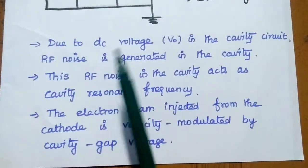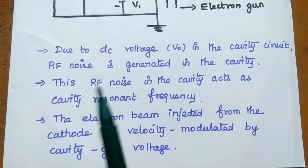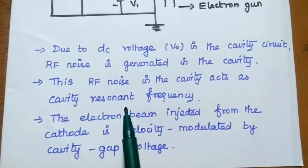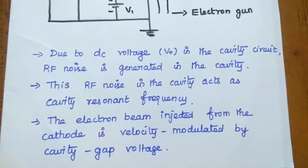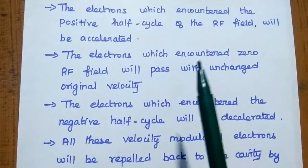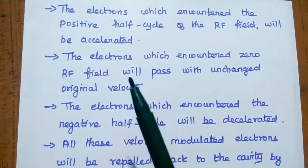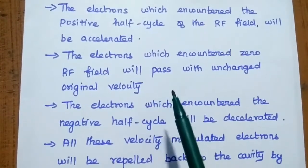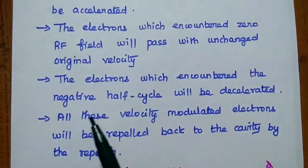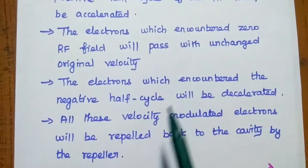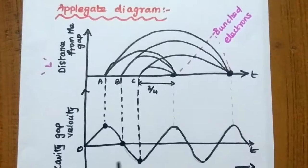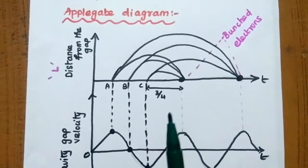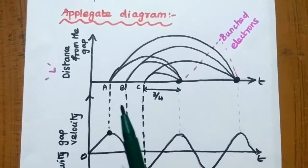Due to the DC voltage in the cavity circuit, an RF noise is generated in the cavity. This RF noise acts at the cavity resonant frequency range. The electron beam injected from the cathode is velocity modulated by the cavity gap voltage. Electrons encountering the positive half cycle of the RF field are accelerated; electrons encountering zero RF field pass with unchanged original velocity; electrons encountering the negative half cycle are decelerated. All velocity-modulated electrons are repelled back to the cavity by the repeller. This velocity modulation can be explained with the Applegate diagram — a plot between time and distance.